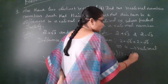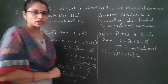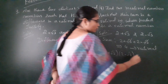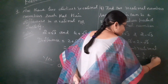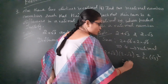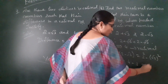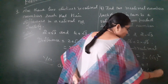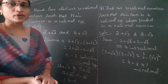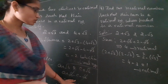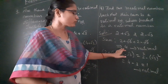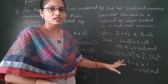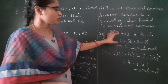Now let us find the product for the same two numbers: (2 + √3)(2 − √3). This is in the form (a + b)(a − b) = a² − b². So 2² − (√3)² = 4 − 3 = 1, which is also a rational number. Note this is not true in all cases — it is true for specific cases like these.